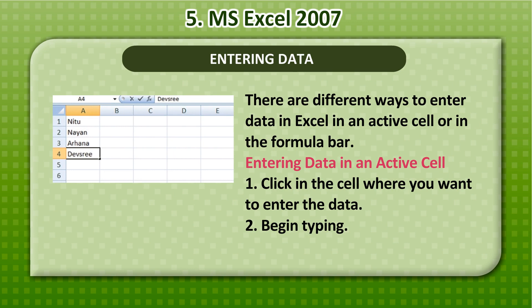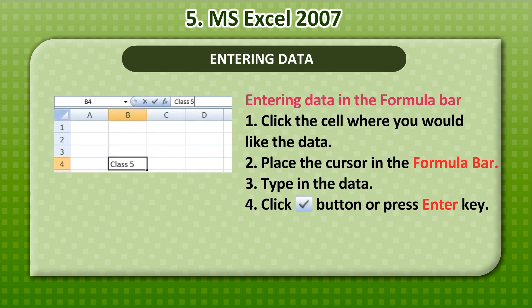Entering Data: There are different ways to enter data in Excel — in an active cell or in the formula bar. To enter data in an active cell: 1. Click the cell where you want to enter the data. 2. Begin typing. To enter data in the formula bar: 1. Click the cell. 2. Place the cursor in the formula bar. 3. Type in the data. 4. Click the Tick button or press the Enter key.